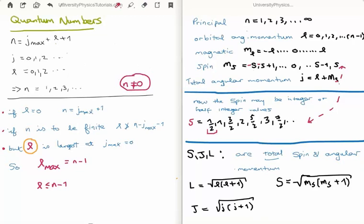So the minimum number or minimum value for N is in fact 1. Now look at the equation. If L is equal to 0, then we find that N is equal to J max plus 1. So this is the minimum value for L.